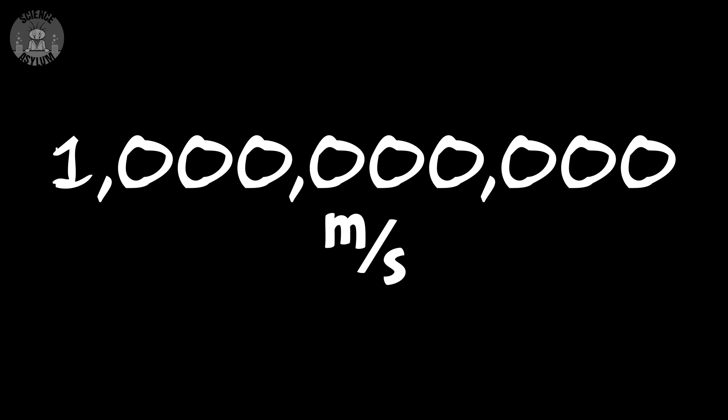But those numbers are still finite. We could easily imagine numbers that are larger. One billion meters per second, for example. Why can't light go that speed? Well, because we think about speeds wrong.